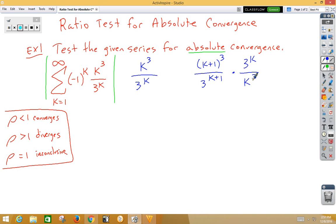We can rewrite 3 to the k plus 1 as 3 to the k times 3 to the 1, allowing us to cancel out the 3 to the k's. Now what we have is a 1 third times a k plus 1 cubed over a k cubed.